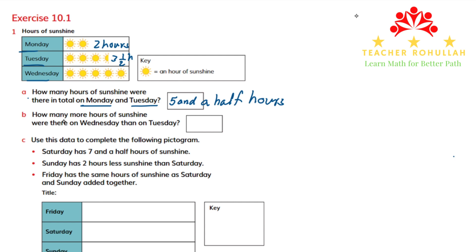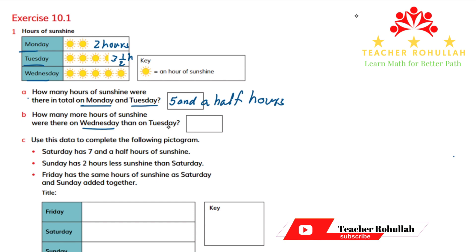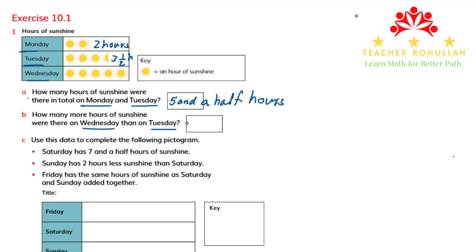Question B says: how many more hours of sunshine were there on Wednesday than on Tuesday? On Tuesday, we know there are three and a half hours, and on Wednesday there are five hours. So five hours minus three and a half hours will be one and a half hours more sunshine.